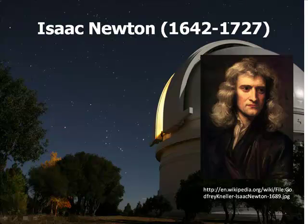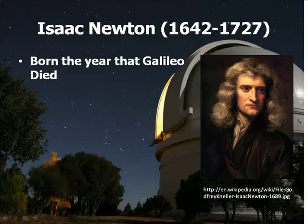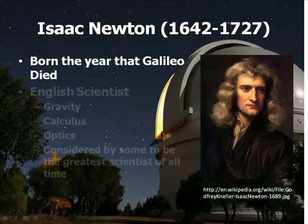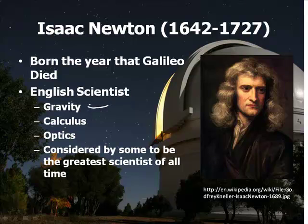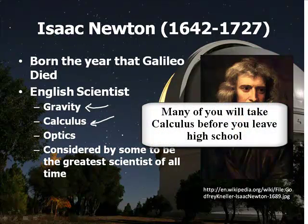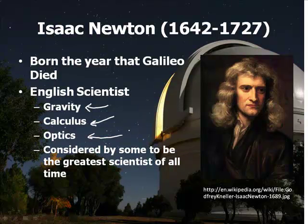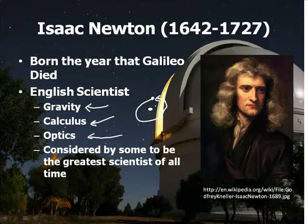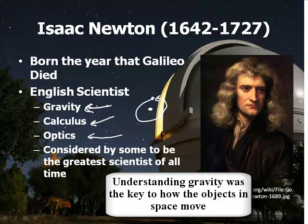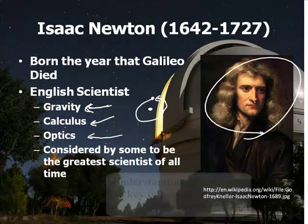Let's start with Isaac Newton — the guy on my shirt. He was an amazing guy. Interestingly, he was born the year that Galileo died. He was an English scientist known as the discoverer of gravity — you might have heard about Newton and the apple. He invented calculus. He studied optics, passing light through prisms, and did a lot of work with optical stuff. Many consider him to be the greatest scientist of all time. Why do the planets revolve around the sun? It has to do with gravity. Newton was the one who figured it out.